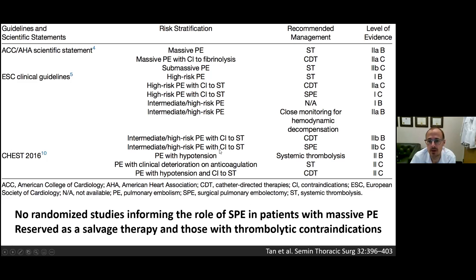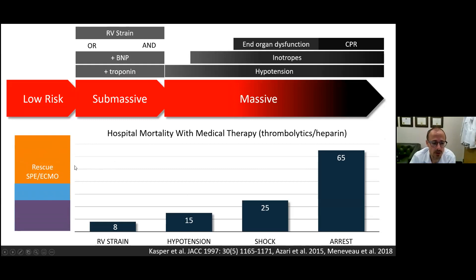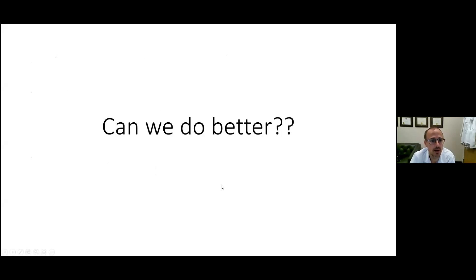There's also a recommendation for intermediate or high-risk PE with contraindication to thrombolytics, but overall there's not much in terms of guideline recommendations because surgical embolectomy was historically reserved as rescue therapy for patients who had arrested and were in advanced shock and multi-organ failure. When surgical pulmonary embolectomy is performed as a first-line therapy, even in sick patients, it is associated with excellent outcomes.